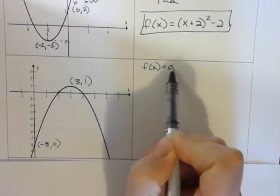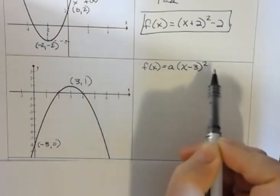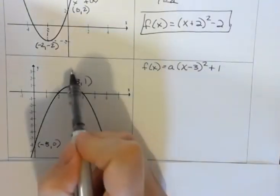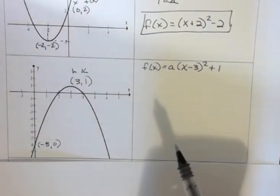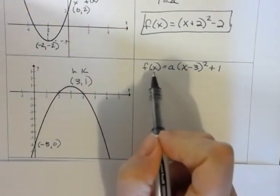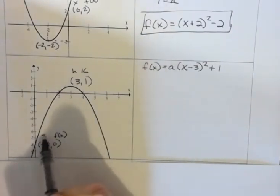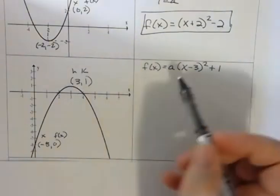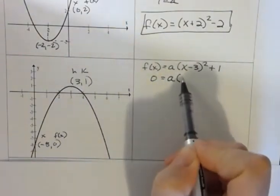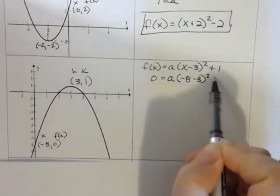So I'm going to start by putting in my vertex. And in this case, I don't know what a is yet, but I know x minus 3 squared plus 1, because my h,k goes from my vertex. Now I want to take my other point that I have, f of x is this y value, and x is negative 8 here. So I have 0 equals a, which I'm trying to find, and then negative 8 minus 3 squared plus 1.